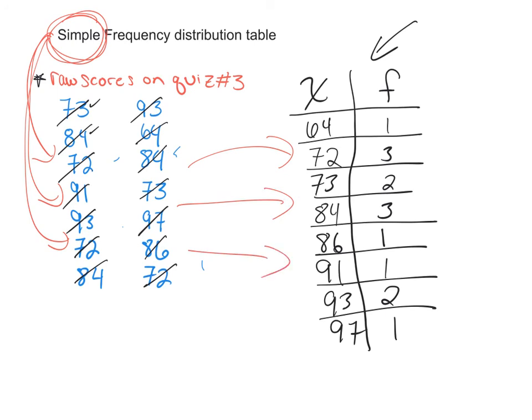There are two different types of distribution tables. You have grouped frequency, which we'll do next. And this one is the simple frequency distribution table, where each one of these raw scores is found over here and we're counted over here in the frequency part of it.